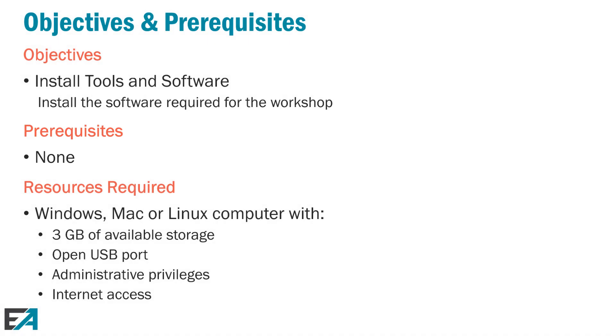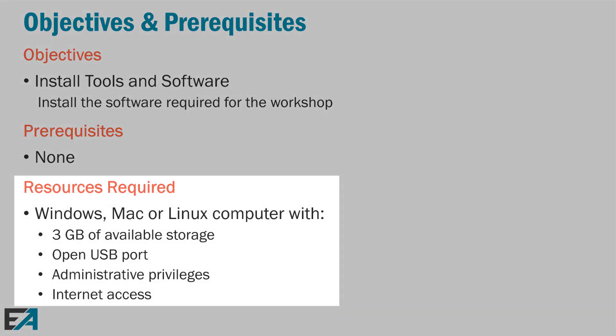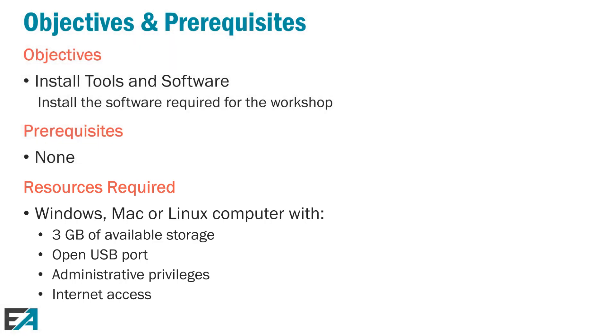There are some resources that are required. You're going to have to have a computer — if you're going to be using Code Composer Studio desktop, you'll need a Windows, Mac, or Linux computer that has about three gigabytes of available storage. You need to have a USB port open so you can plug in your development board, you have to have administrative privileges, and you need to have internet access. Those are the basic resources required to run these tools.